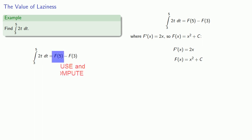Capital F of 5 is going to be 25 plus c, and capital F of 3 is going to be 9 plus c, and notice that when we subtract them the value of c drops out and we just get the number 16.